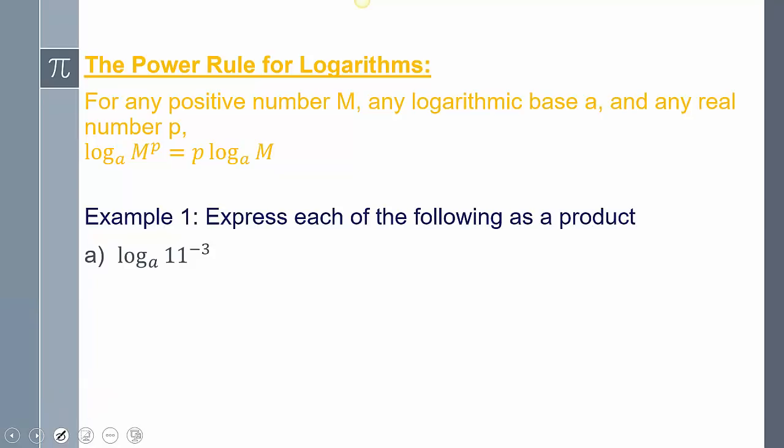So let's look at that. In the first example here, I have log base a of 11 to the negative third power. I could take that and move it to the front, so I get negative 3 times log base a of 11. Just want to point out, you could do the opposite. I could also take this and move it up here if I wanted to, but for now, we're just going to understand that I can take the exponent and move it in front of the logarithm.